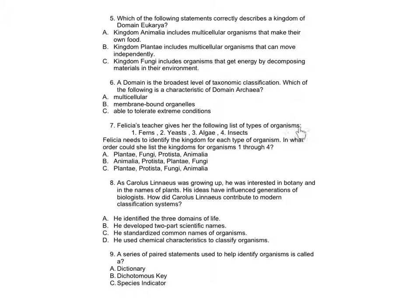Number 7: Felicia's teacher gives her the following list of types of organisms: 1. Ferns, 2. Yeasts, 3. Algae, 4. Insects. Felicia needs to identify the kingdom for each type of organism. In what order would she list the kingdoms for organisms 1 through 4? A: Plantae, Fungi, Protista, Animalia. B: Animalia, Protista, Plantae, Fungi. C: Plantae, Protista, Fungi, Animalia.